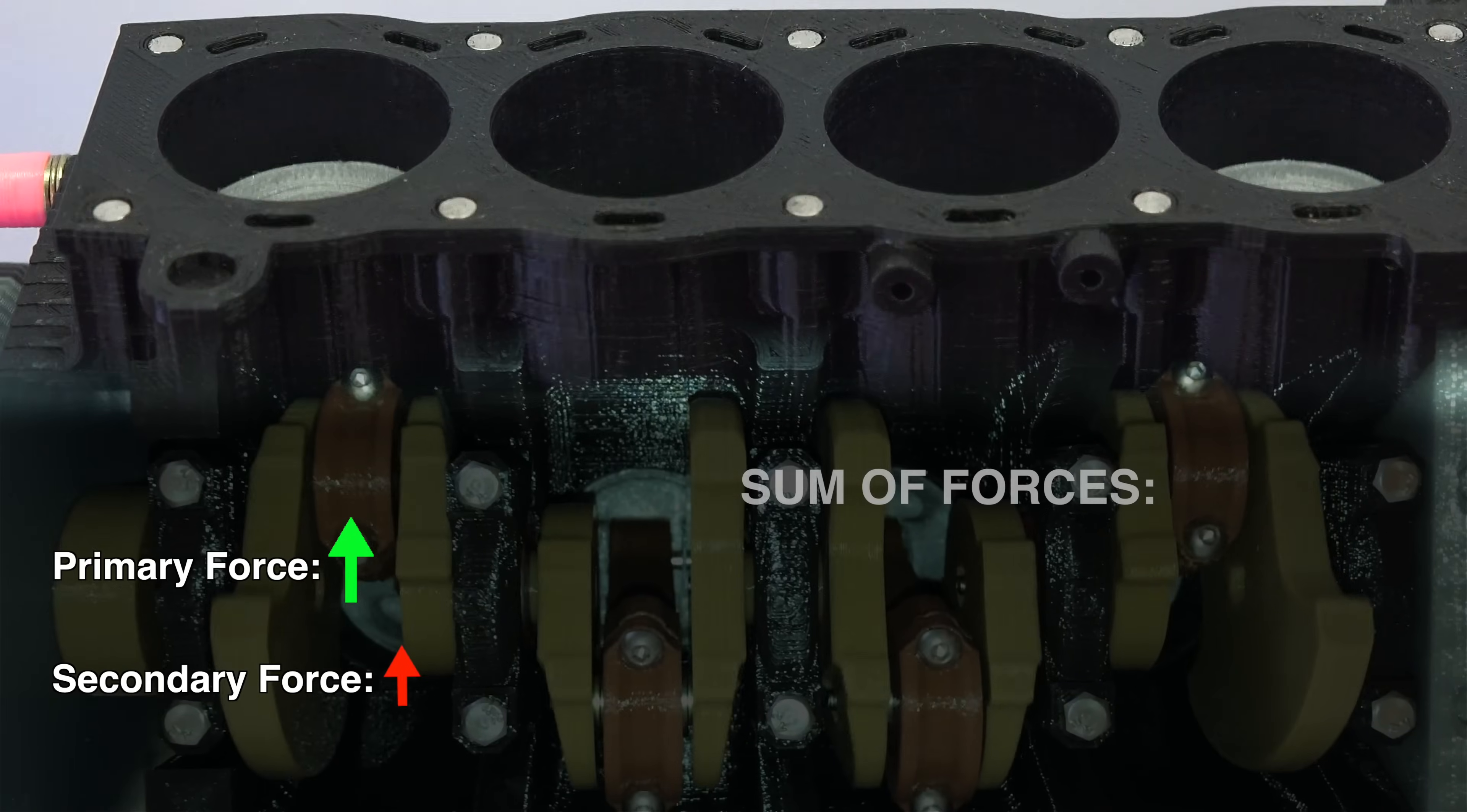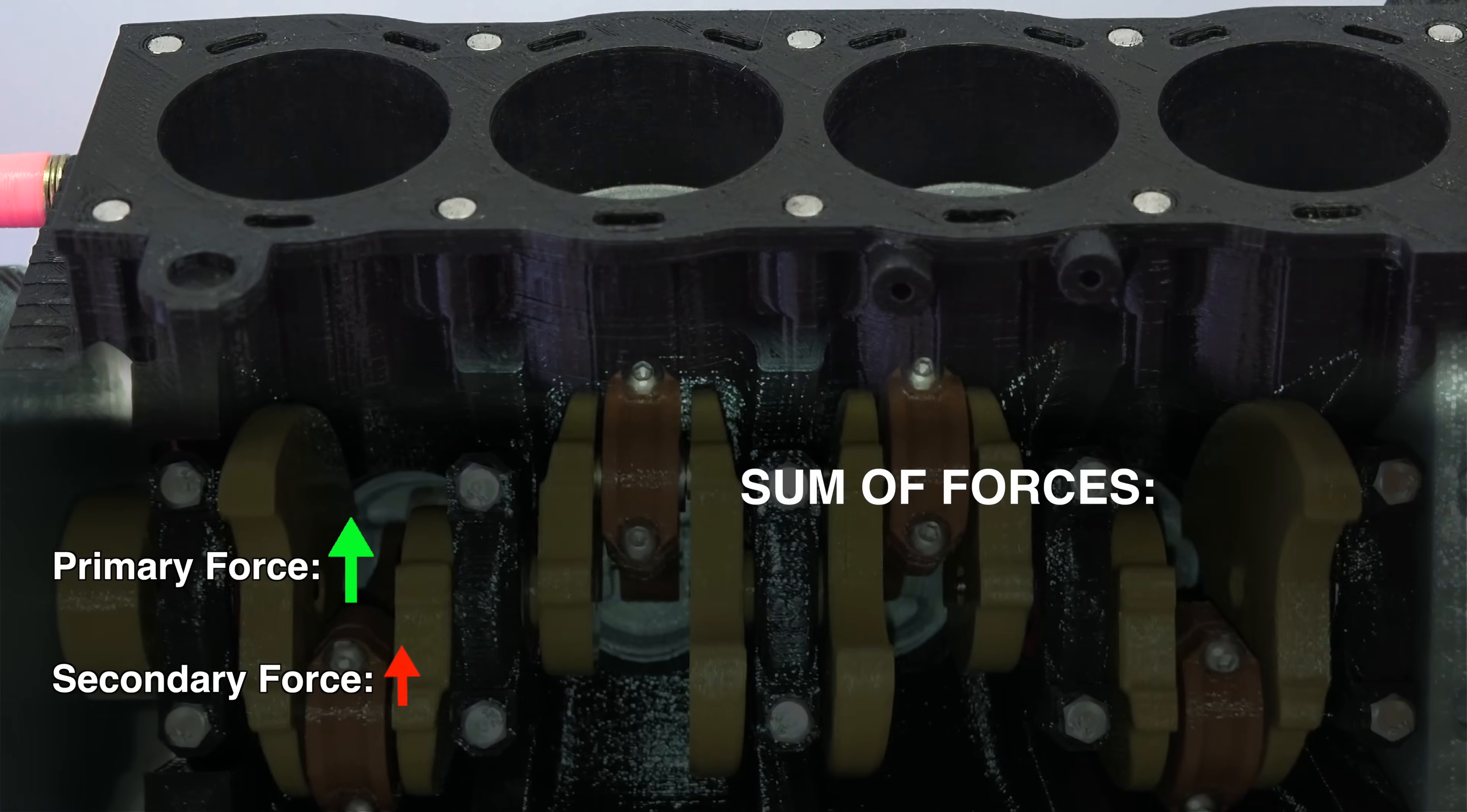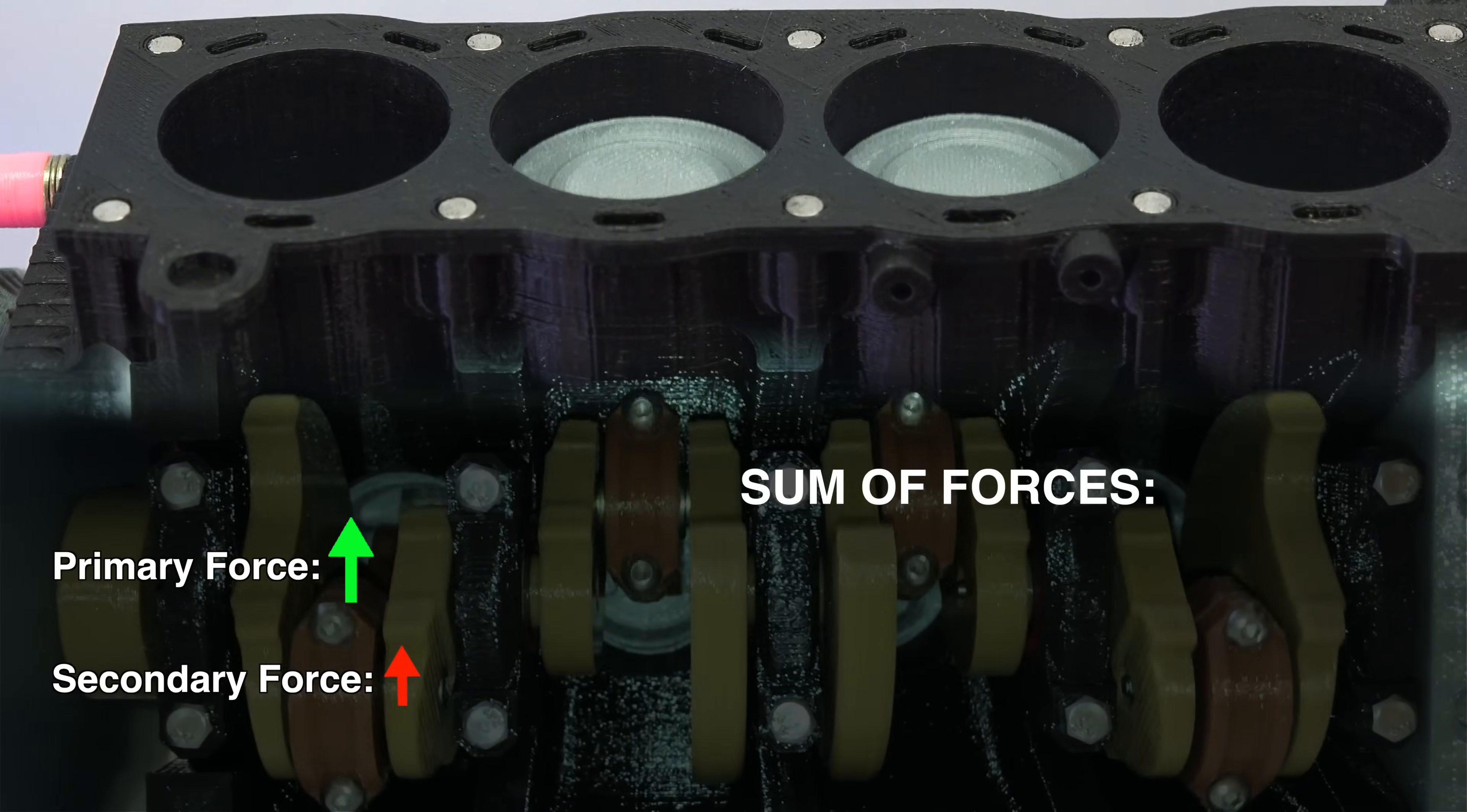That said, for secondary forces the forces do not balance out as they both point upward at top dead center and bottom dead center. This tends to limit the size of inline four-cylinder engines because as they get larger and rev higher they tend to vibrate more. This can be countered using balancing shafts but that means a more complex engine design.